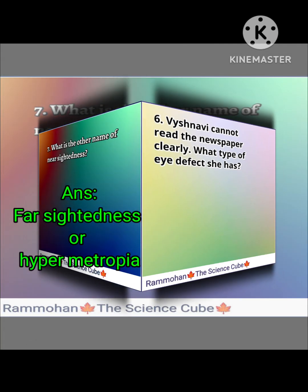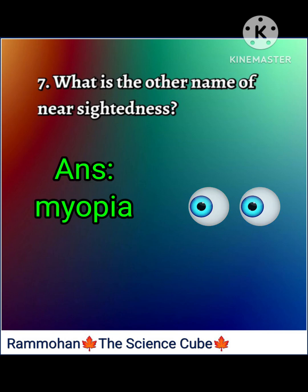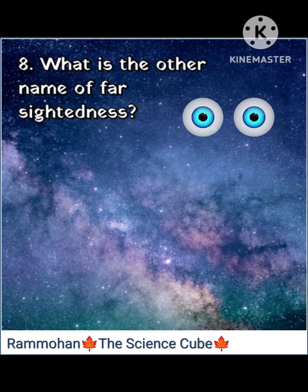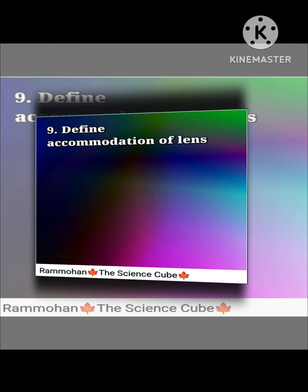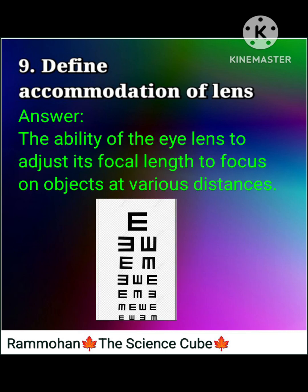Sixth question: Vaishnavi cannot read the newspaper clearly — what type of eye defect does she have? Answer: farsightedness, hypermetropia. Seventh question: what is the other name of nearsightedness? Answer: myopia. Eighth question: what is the other name of farsightedness? Answer: hypermetropia.